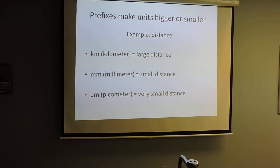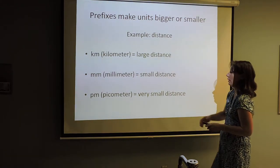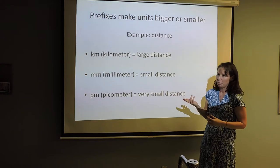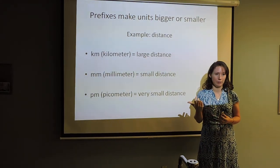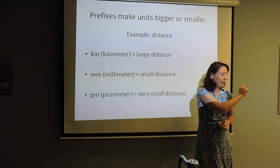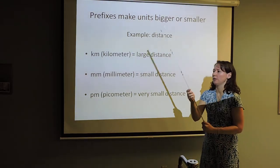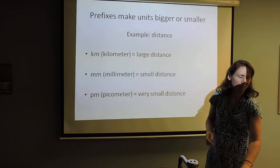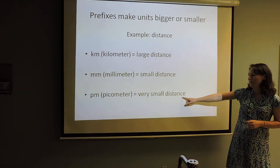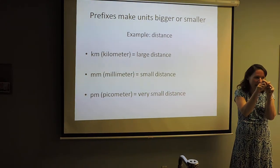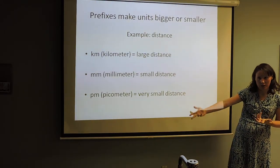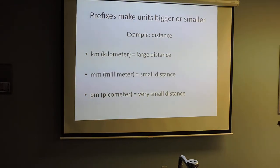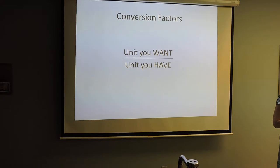Prefixes indicate whether something's been made bigger or smaller. For distance: would you measure the length of this room in kilometers? Probably not. But the distance from here to my house — yes, kilometers would be useful. A millimeter is a thousandth of a meter — one of the tiniest little tick marks on a ruler. We wouldn't measure this room in millimeters, and certainly not in picometers — that's the unit we use to measure the width of an atom.